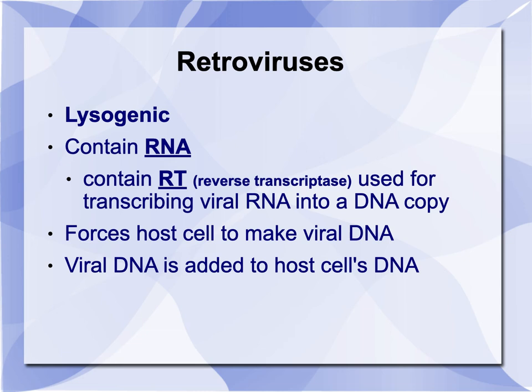Retroviruses are a unique subset of viruses. They undergo a lysogenic cycle, they all contain RNA, and they contain a special enzyme called RT, which stands for reverse transcriptase. What they do is take their viral RNA, make a DNA copy of it, then make an mRNA copy of it, and then make their proteins — remember transcription and translation? They do a step before transcription. They force the host cell to make viral DNA, and then that DNA is added to the host's DNA as a provirus.